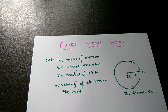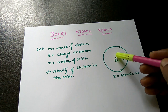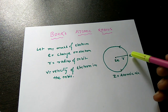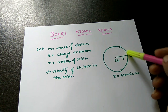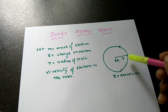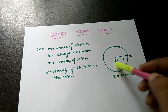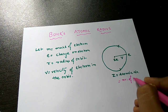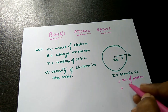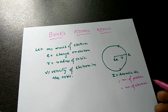We know very well that in an atom, the positive charge remains at the center and the negative charge — that is, electrons — revolves around the nucleus in a certain orbit. The charge at the center is equal to ZE, where Z is the atomic number, equal to the number of protons, which equals the number of electrons when the atom is in a neutral state.